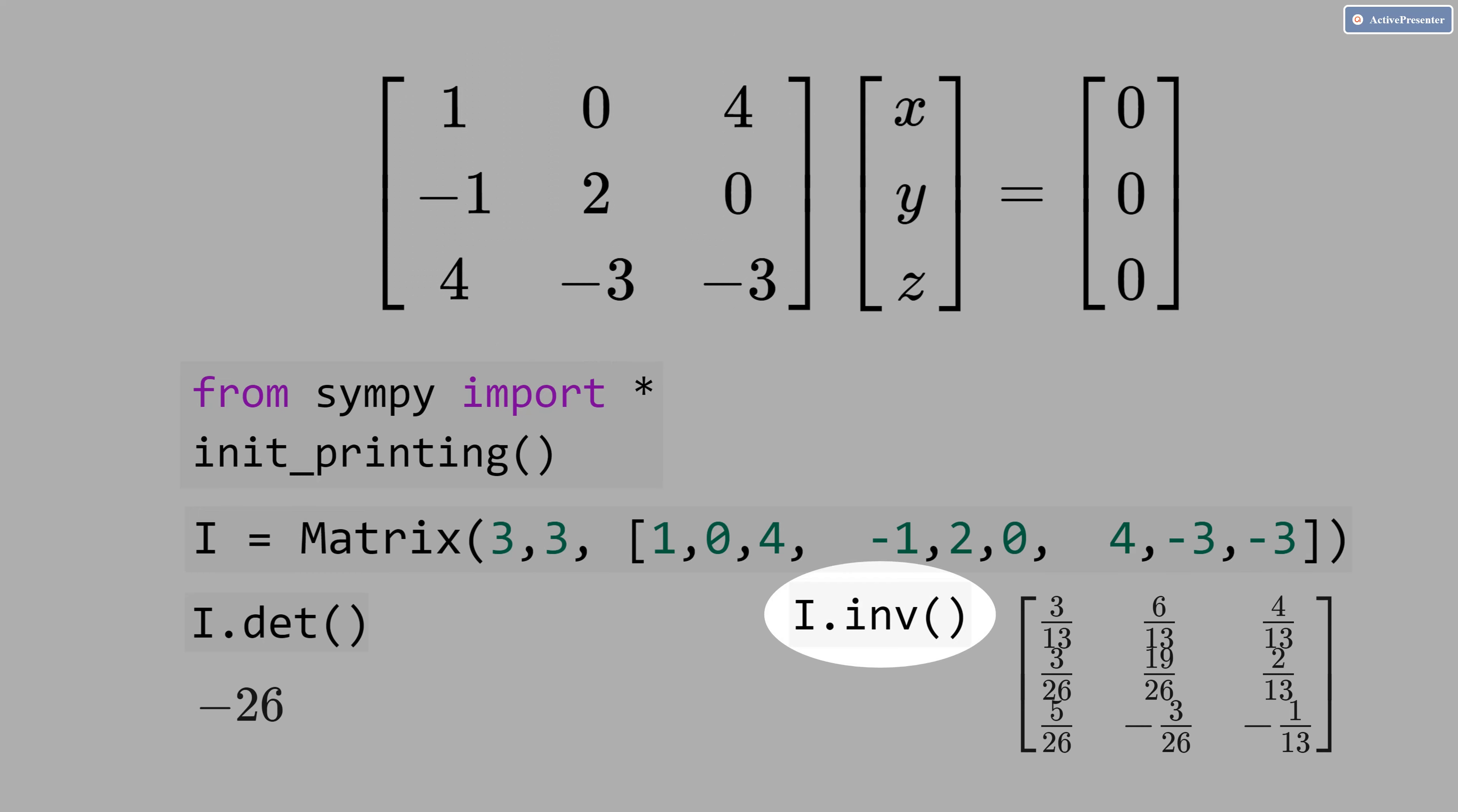Let's get the inverse for fun. This matrix here has the power of removing this matrix here. And whatever you multiply by the right side, you get zero. Therefore, you get that x, y and z equal zero.